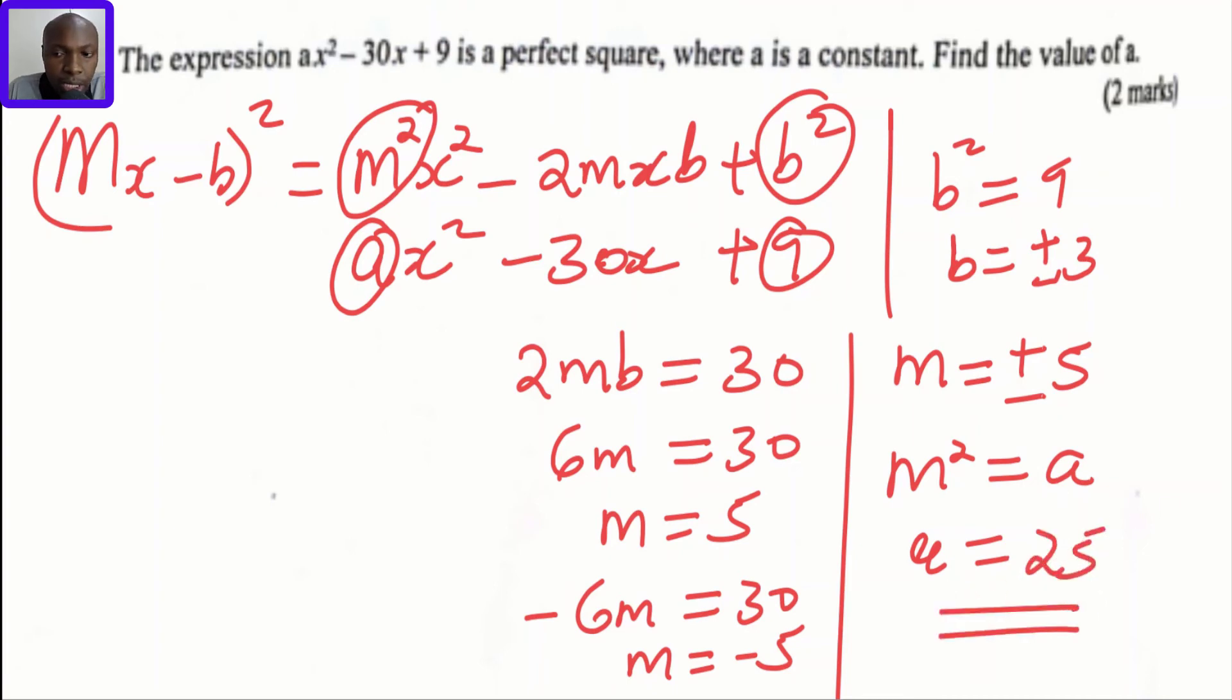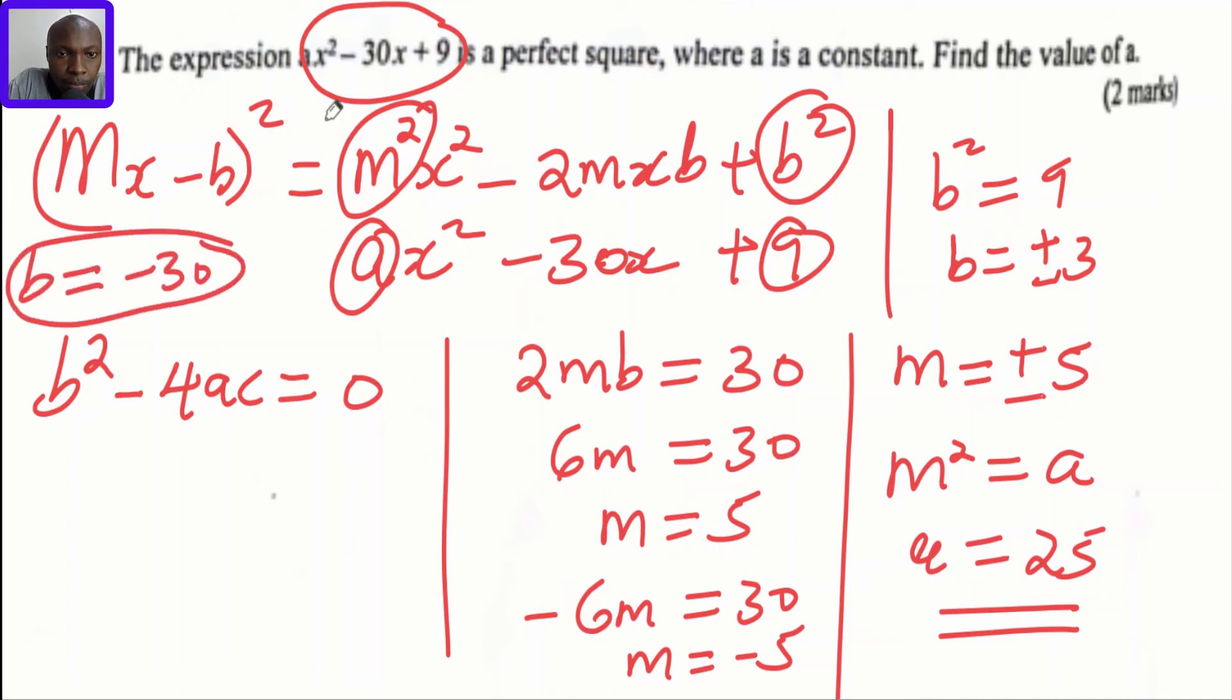There's another method when you use this formula: b² - 4ac = 0. In this equation ax² - 30x + 9, b will be -30 and c is 9.